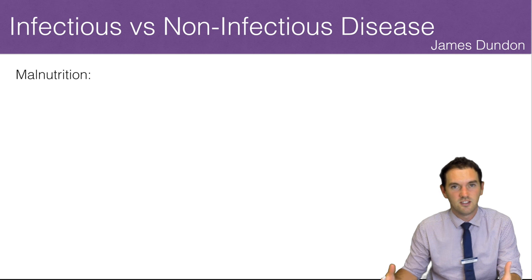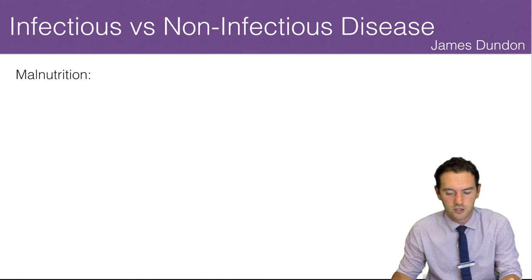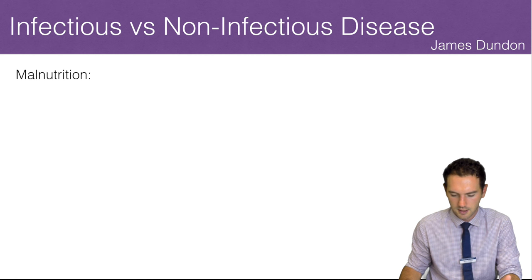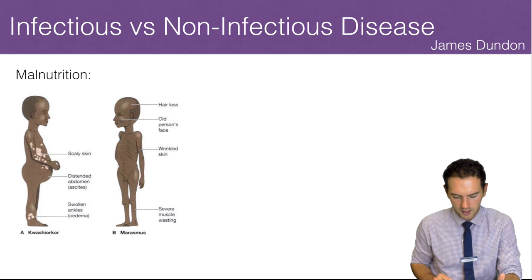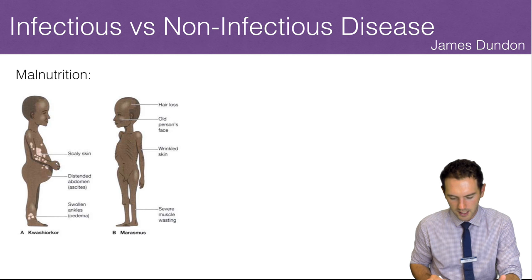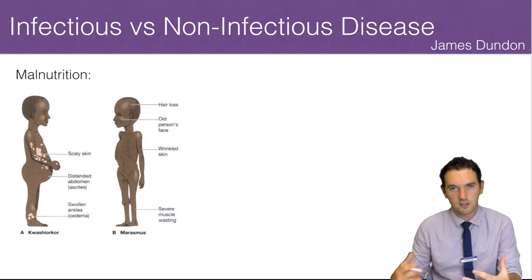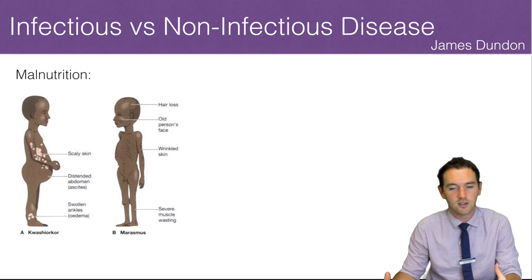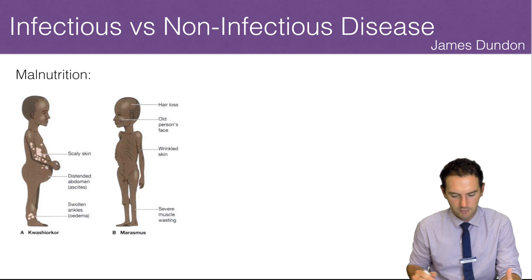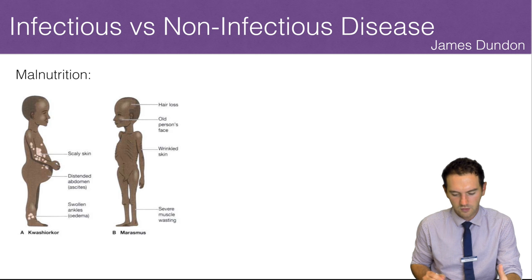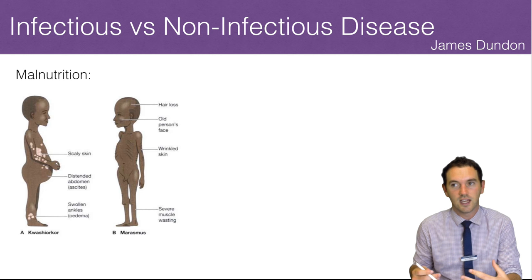Malnutrition is simply a diet issue. I've got two examples here: Kwashiorkor — I can never say that correctly — and Marasmus. These are two nutrition disorders and generally happen in third world countries where people don't get a balanced diet. You can see that distended abdomen, scaly skin, some swollen ankles. They're simply from not getting enough protein and enough calories through carbohydrates and things like that.